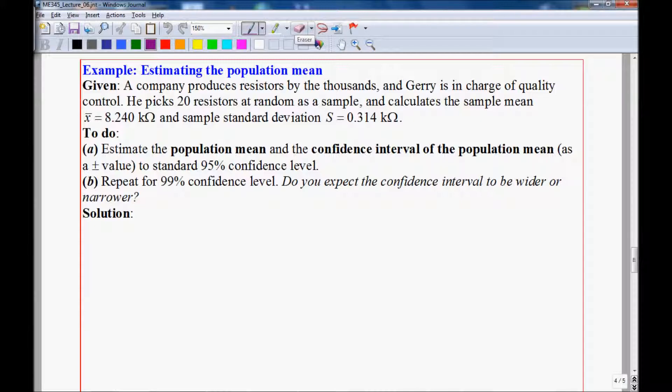Here's an example of estimating the population mean using the student's T PDF. This company produces resistors by the thousands, and Jerry is in charge of quality control.